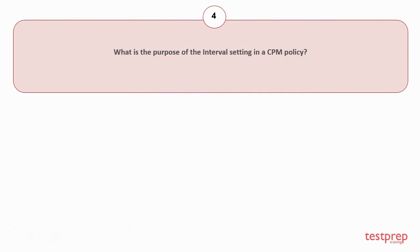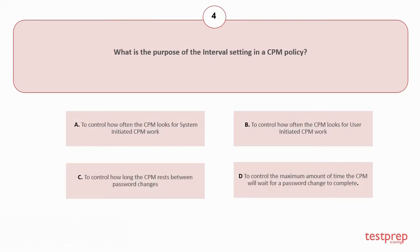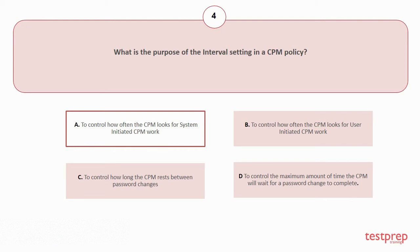Question number 4: What is the purpose of the interval setting in a CPM policy? Your options are: A. To control how often the CPM looks for system-initiated CPM work. B. To control how often the CPM looks for user-initiated CPM work. C. To control how long the CPM rests between password changes. D. To control the maximum amount of time the CPM will wait for a password change to complete. The correct answer is option A.